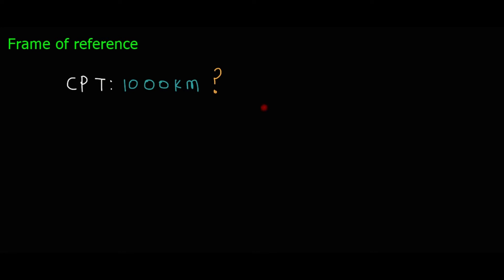Let's talk about position. The distance from Polokwani to Cape Town is 1000 km. Polokwani is the reference point — it is the origin. It is now a frame of reference. Because if the reference point changes, for example from Polokwani to Cape Town versus from another town to Cape Town, the distance will change.